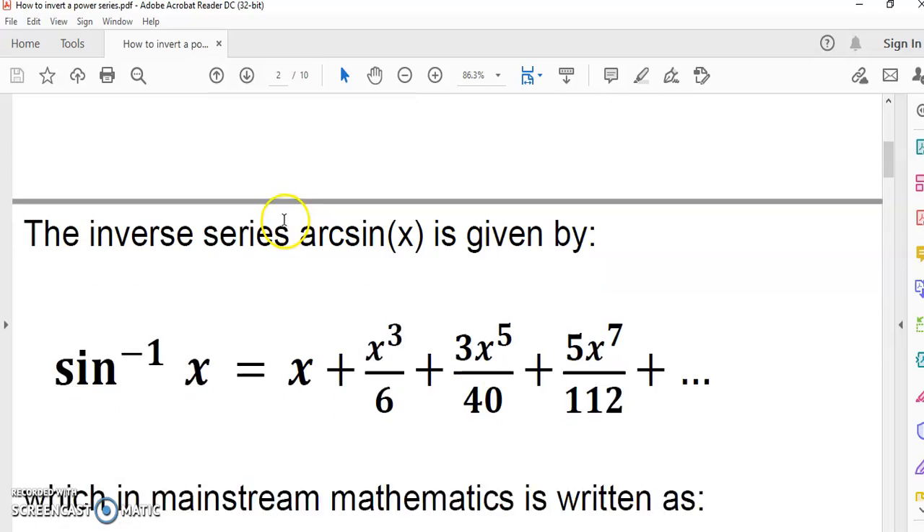What Newton did was he took the series and inverted it through a process called extracting the root, which is this process here. Newton also discovered this arc length formula from the hyperbola which gives the length of any circle arc. If measured from 0 to 1 or 0 to whatever the radius is, it would give you a quarter of the circle arc.